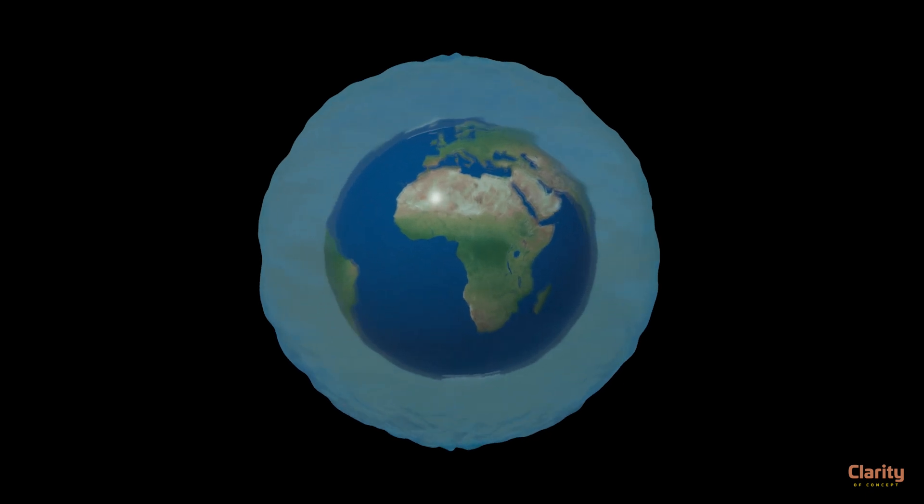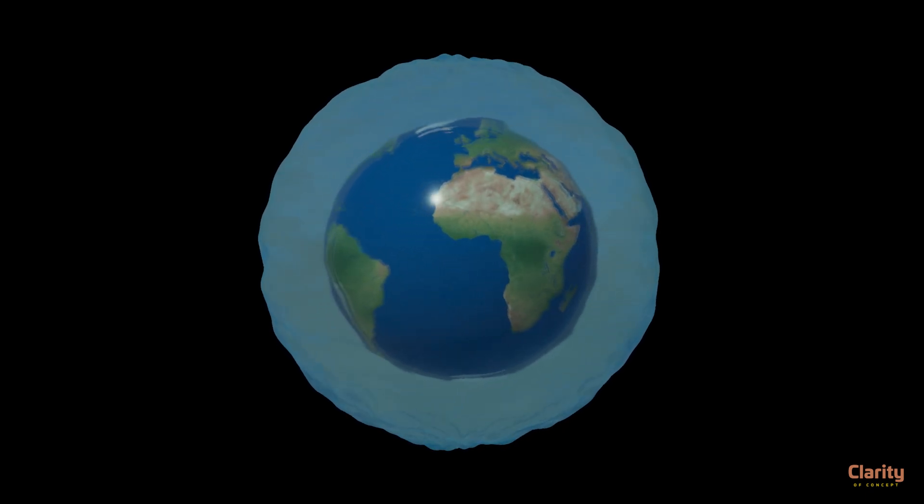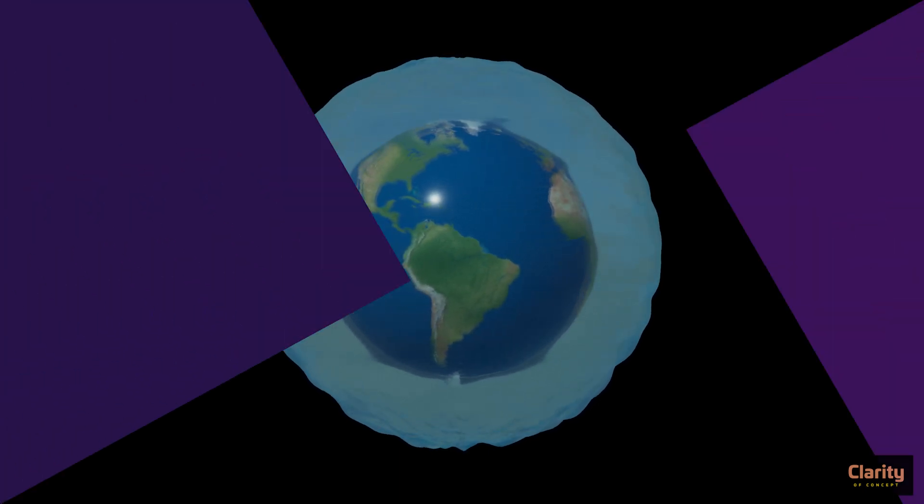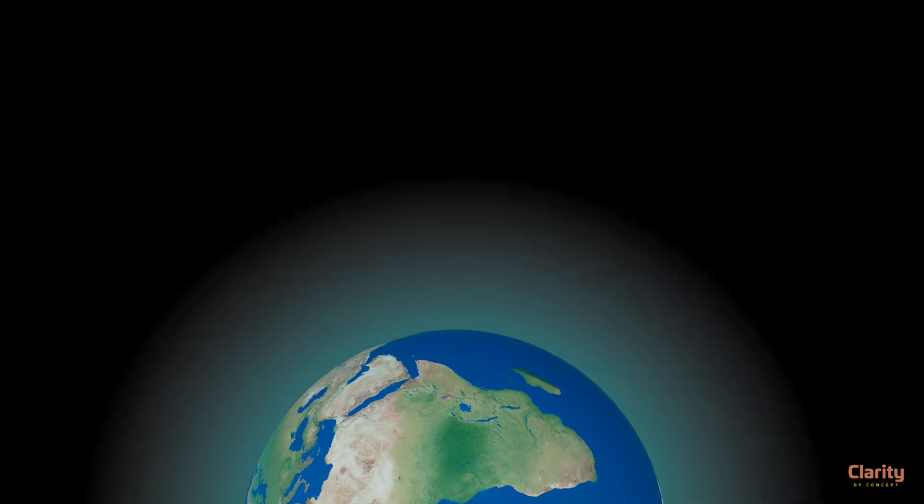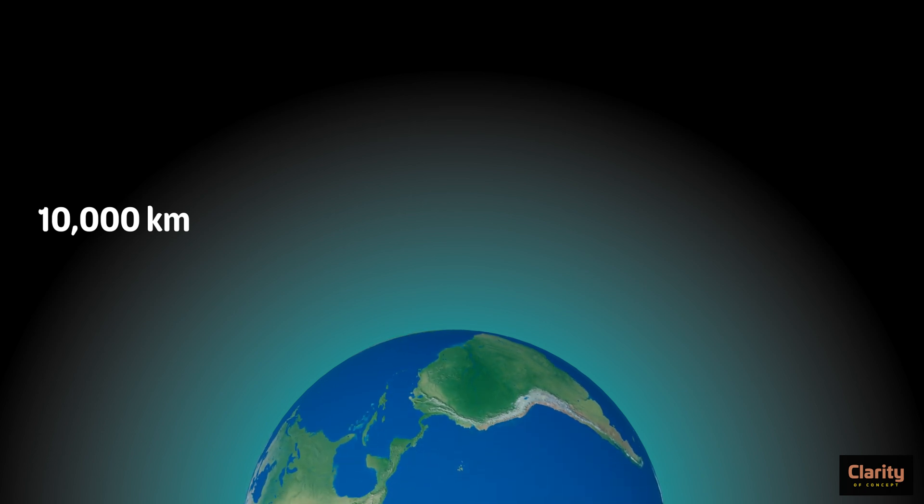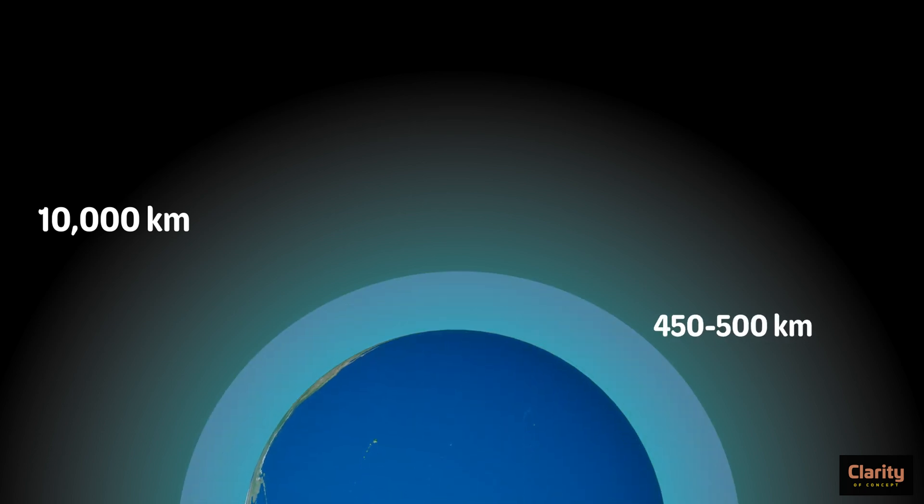This mixture of gases float around Earth. There is a variation in temperature and composition of these gases based upon different place and time. Earth's atmosphere extends up to 10,000 km. But at such heights, there are very few gas molecules. Therefore, for all practical purposes, we consider 450-500 km as atmosphere.